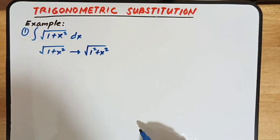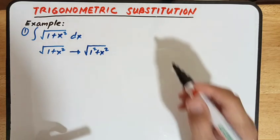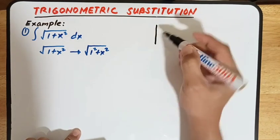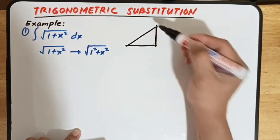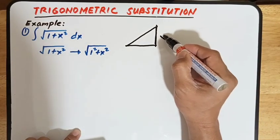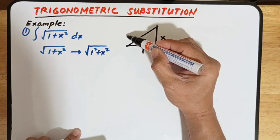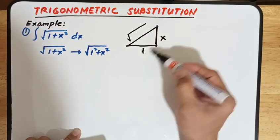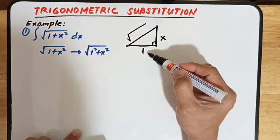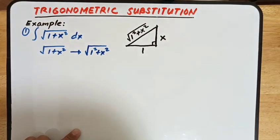We can say that this involves the Pythagorean theorem. From our Pythagorean theorem, if we have this right triangle, and say this is our x and this is our 1, then our hypotenuse is the square root of the sum of the squares of the two legs: 1 squared plus x squared.